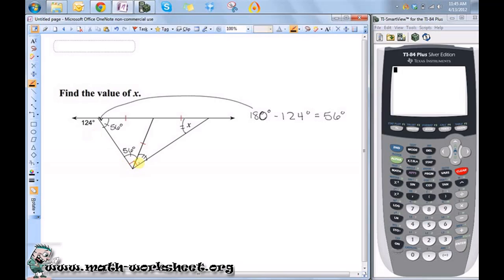Well, now I can find this one, because this angle and this angle are complementary, which is represented by this square corner here. They add up to 90 degrees, so 90 degrees minus 56 degrees is equal to 34 degrees.